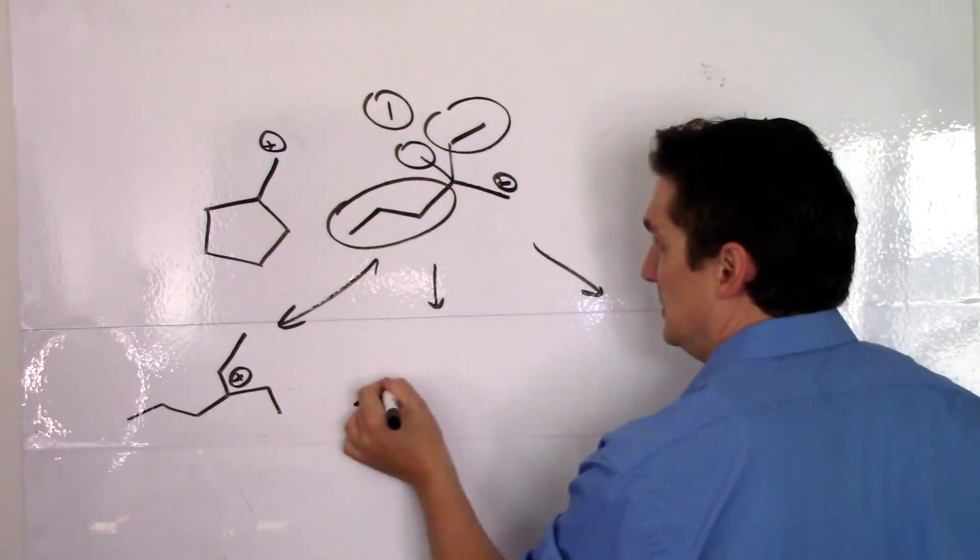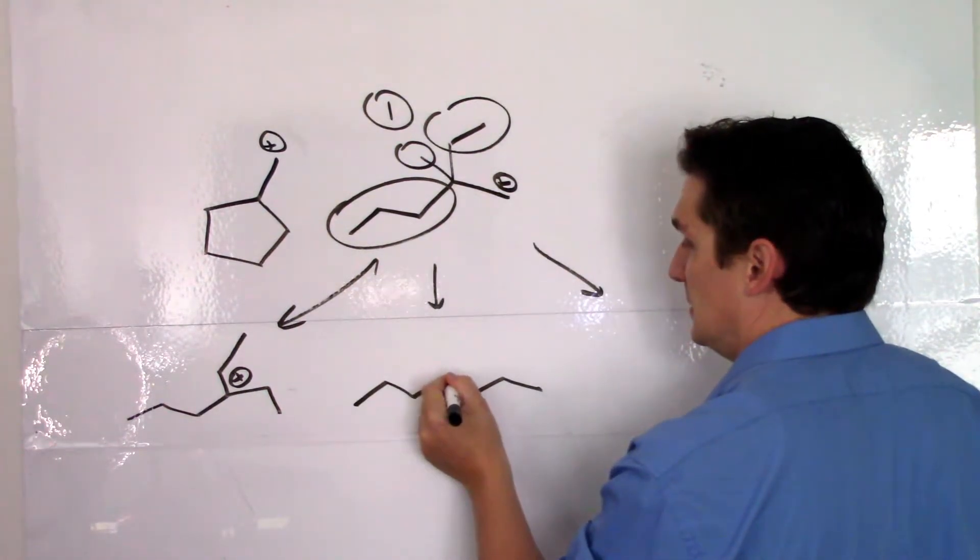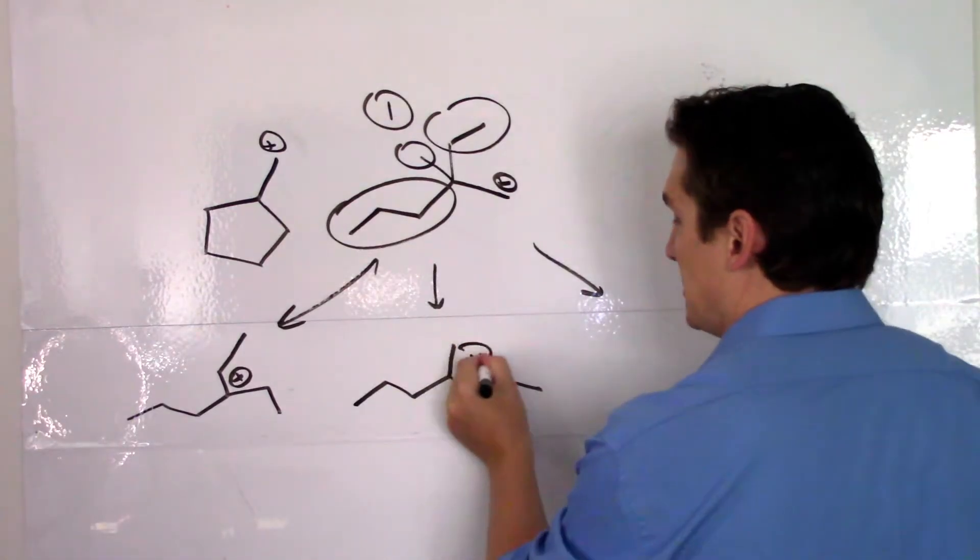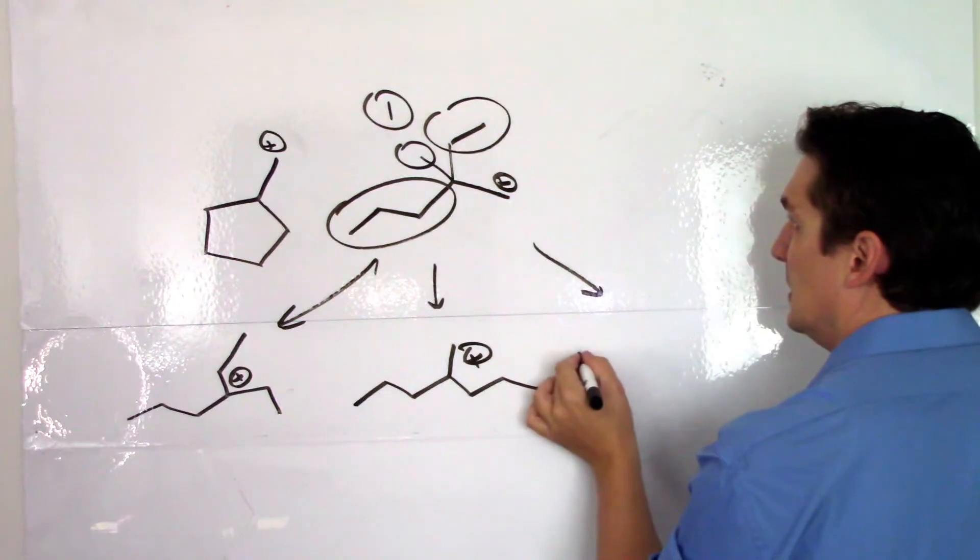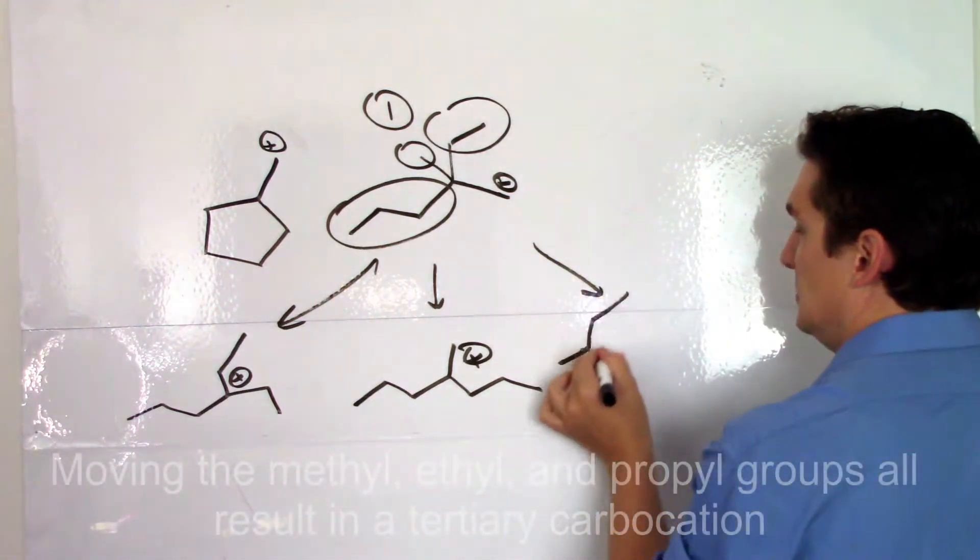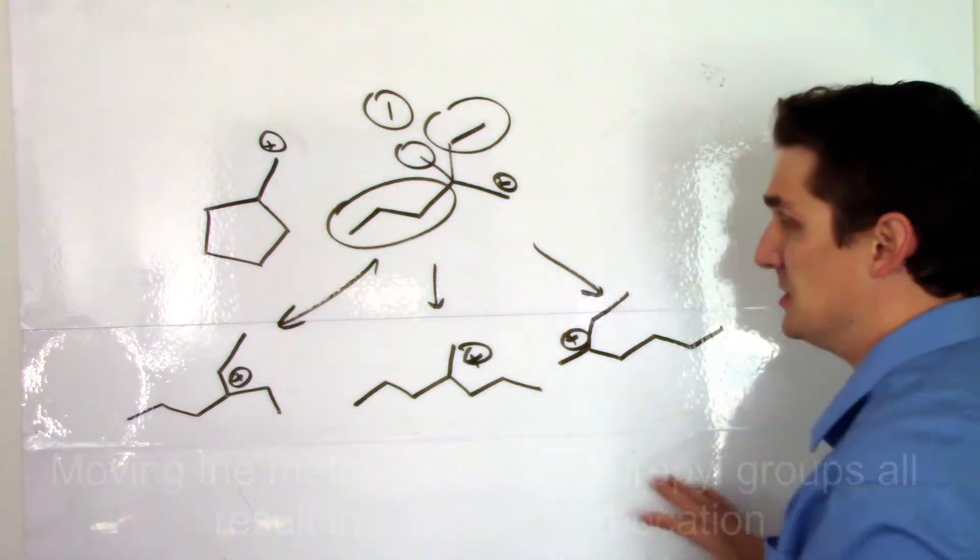If we move the ethyl group, that would give us a tertiary carbocation. And if we were to move the propyl group, it would give us this carbocation.